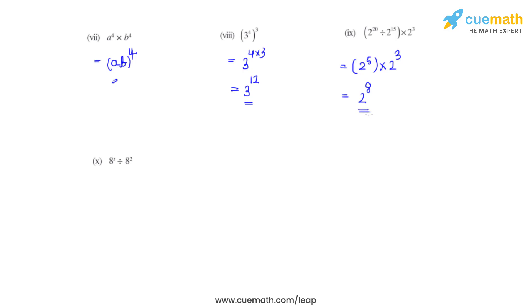In the tenth and last bit, we have 8 raised to t divided by 8 raised to 2. The bases are the same and they are in division, so we subtract the powers, keeping the same base. The answer is 8 raised to t minus 2.